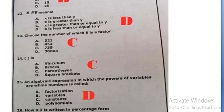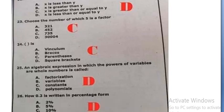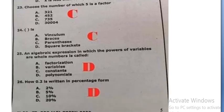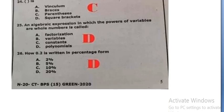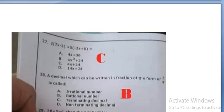An algebraic expression in which the powers of a variable are whole numbers is called polynomials, option D. How 0.2 is written in percentage form: 20%, option D.